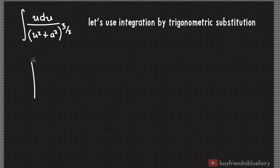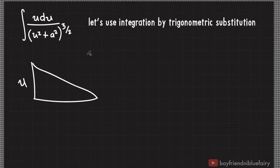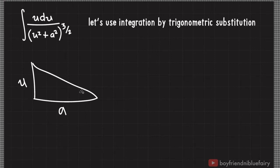First, draw any right triangle. Let's assume that the integration variable u is along the vertical side of this triangle. Choosing whether u or a is on the vertical, horizontal, or hypotenuse of the triangle actually depends on the problem. Here, let's assume that u is on the vertical side of the triangle and the constant a is on the horizontal side of the triangle.